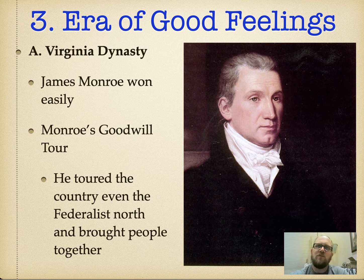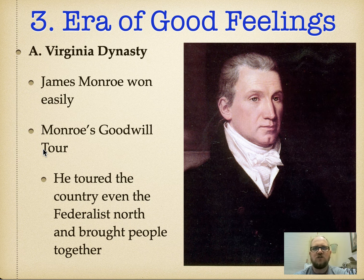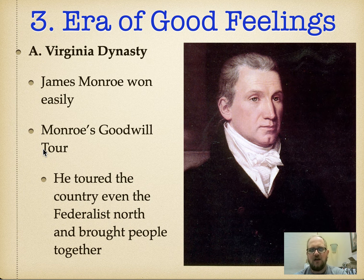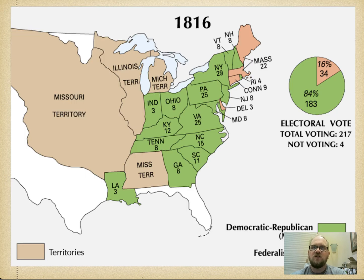The Era of Good Feelings comes from when Monroe gets elected in 1816 and goes on a goodwill tour across the country, really trying to link the country together and bring Federalists into the Democrat-Republican Party. However, because of the Hartford Convention and the slow dismantling of the Federalist Party, the Federalists will completely dismantle after the 1816 election. This will be the last election the Federalists run a national candidate. By 1820, they cease to exist and the Democrat-Republicans will be a universal party across America.